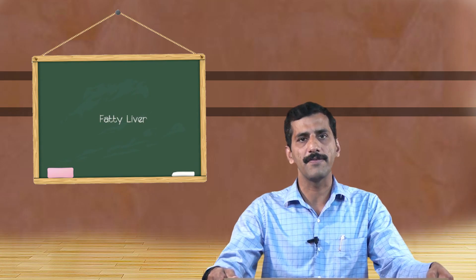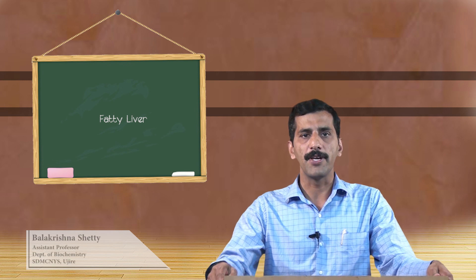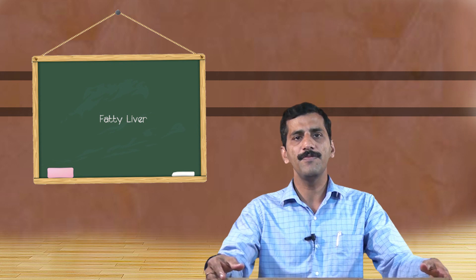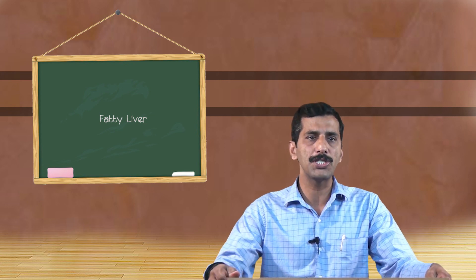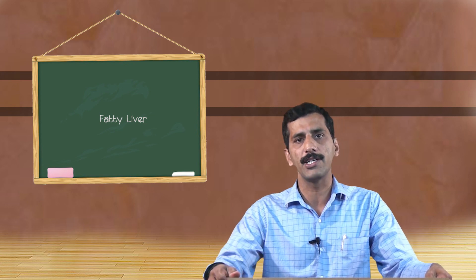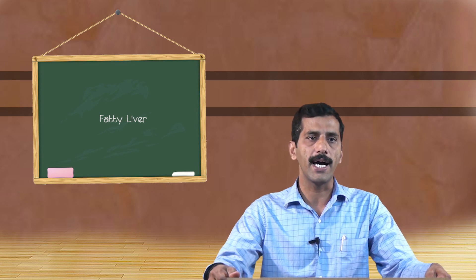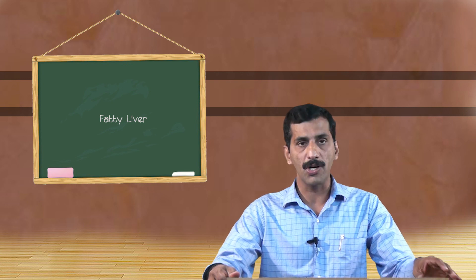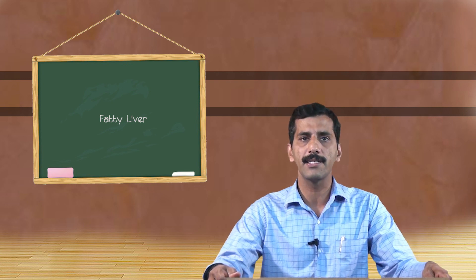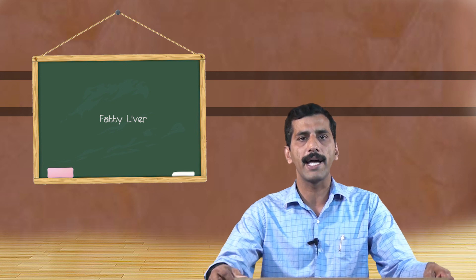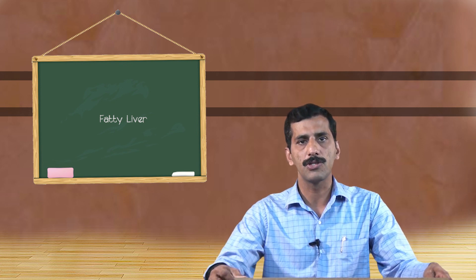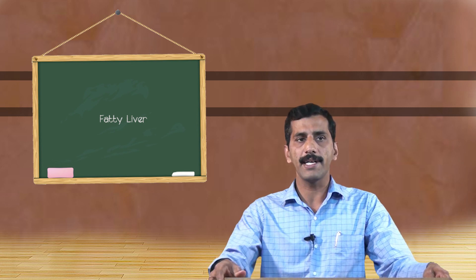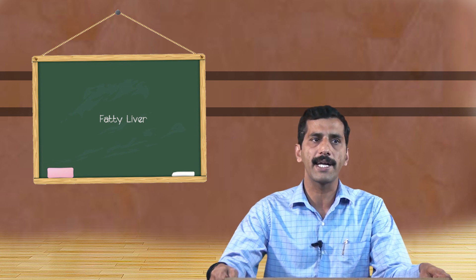Hello friends, today we are going to learn some important aspects of fatty liver. As you all know, the liver is one of the most important metabolic organs in the human body and also one of the largest organs of the body. When the liver fails because of any particular disease, all the metabolic activities of the body stop, and the person enters into a coma state. So the liver is mainly meant for metabolic activities.